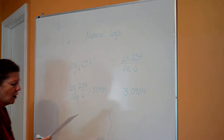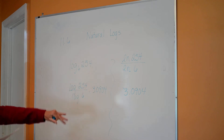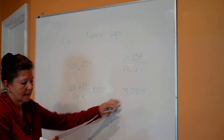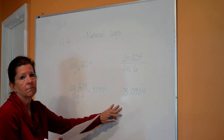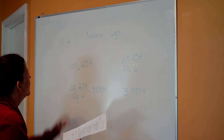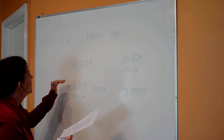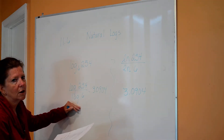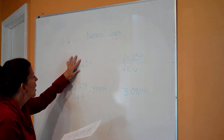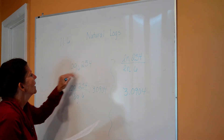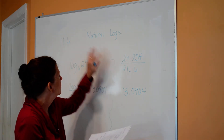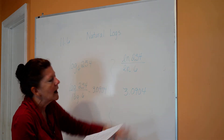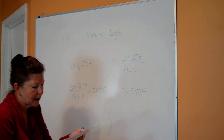This is what they call converting to the natural log and then evaluating. You're going to get the same answer either way. Now, you cannot do a common log on the top and a natural log on the bottom. If you're doing common log in an equation, you have to do all common log. If you're doing natural log, you have to do all natural log.